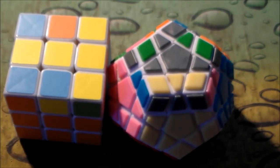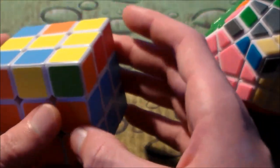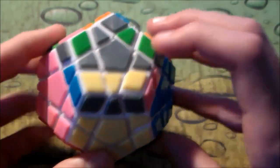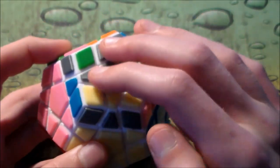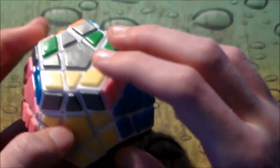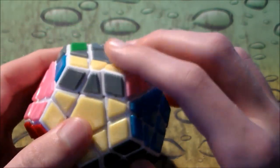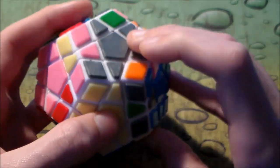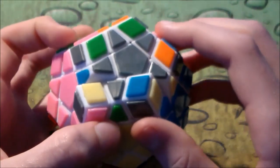This first case, which looks like this on the megaminx, is the same exact case as this on three by three. It's just the basic T. We're going to hold it with these two on the left and then the single edge on the right. The algorithm is F R U R prime U prime F prime. So as you see, your edges are now oriented.